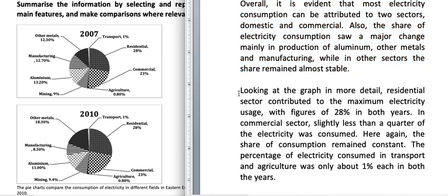Looking at the graph in more detail, the residential sector contributed to the maximum electricity usage with figures of 28 percent in both years. In the commercial sector, slightly less than a quarter of the electricity was consumed — 23 percent is slightly less than a quarter, since a quarter is 25 percent. Here again the share of consumption remained constant.